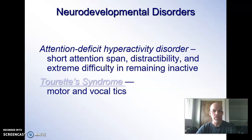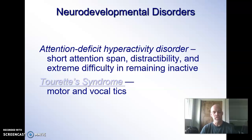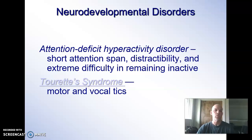Tourette syndrome. I've got a nice little video of a gentleman — if it's the one I'm thinking of, he's got a great sense of humor and lives with Tourette syndrome. You get motor and vocal tics. All of a sudden your arm will just flinch — those motor tics are uncontrollable movements. And vocal tics oftentimes take the form of swearing, where you'll just suddenly say a bad word. The gentleman talks about this on the video we'll watch.